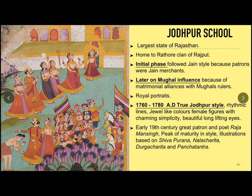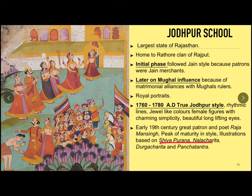when rhythmic lines and jewel-like colors showed up in the painting. Female figures had charming simplicity and beautiful, long, uplifted eyes. But the peak of maturity was achieved during the early 19th century under Raja Man Singh, a great patron and a poet himself. Illustrations based on Shiv Puran, Naracharita, Durga Charita, and Panchatantra were painted in this phase.